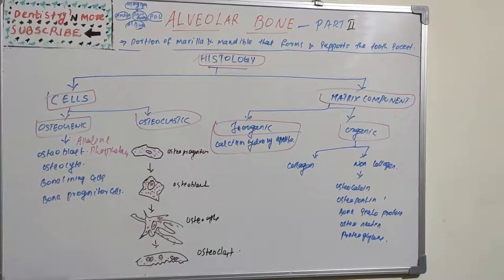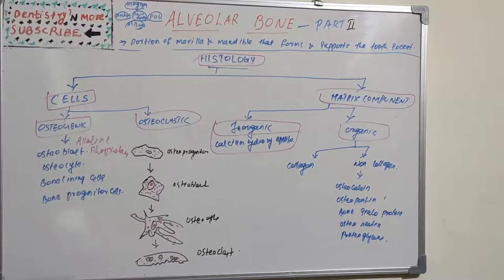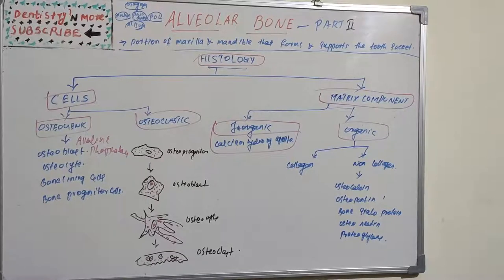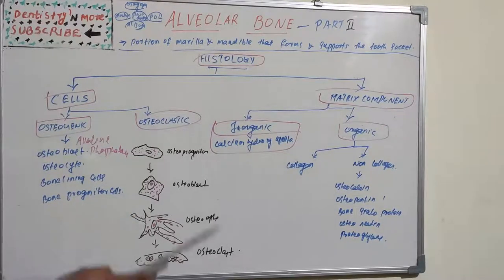Bone lining cells: when bone surfaces are neither in the formative nor in the resorptive phase, the surface is completely lined by a layer of flattened cells known as bone lining cells, which are regarded as post-proliferative osteoblasts. These bone lining cells are present when osteoblast and osteoclast activities are not occurring on the bone surface.